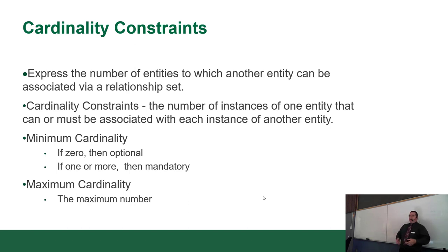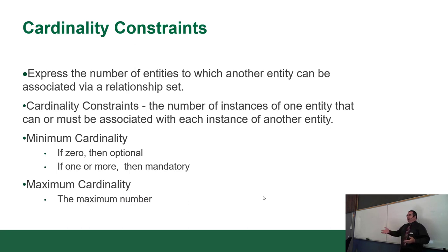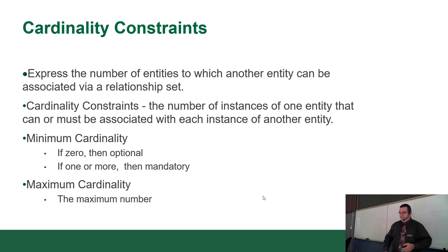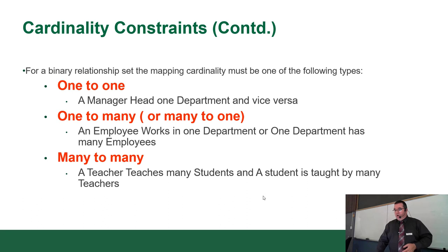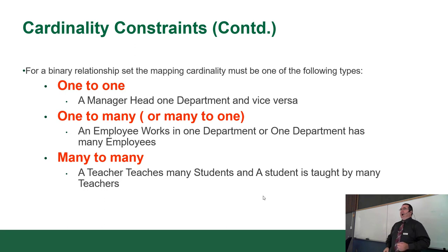It'd be dumb to say a customer can only ever have five orders — that's a stupid rule. A customer must have at least one order and can have as many as they want. We've already covered one-to-one, one-to-many, and many-to-many last week, so I'm not covering those again. Now let's talk about the symbols.